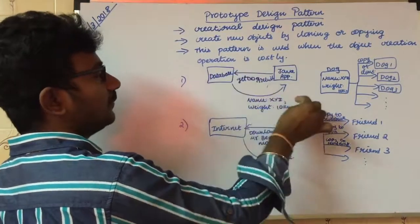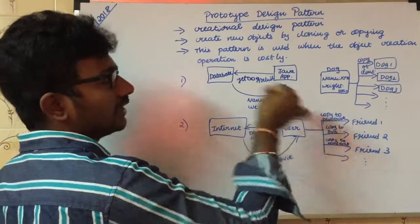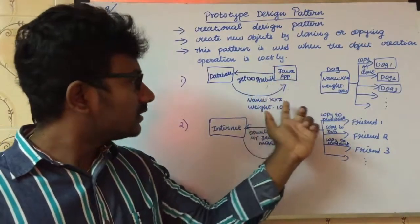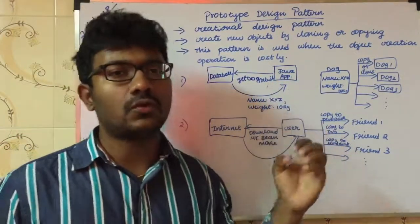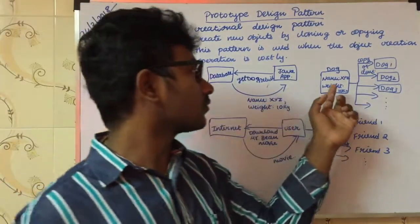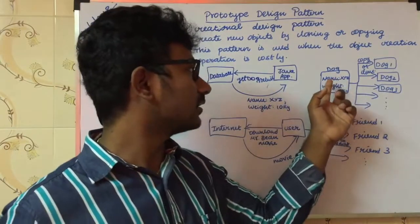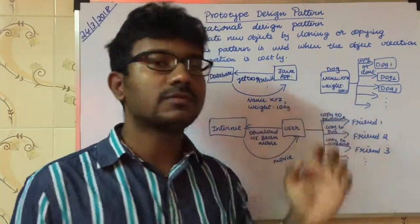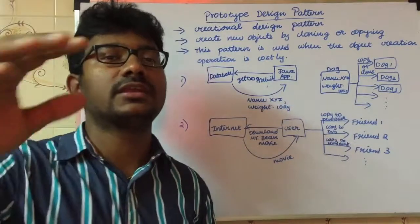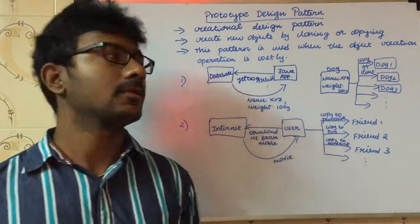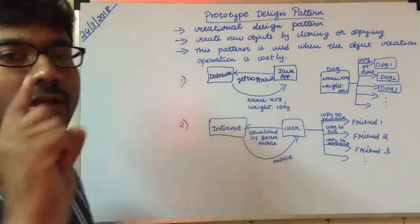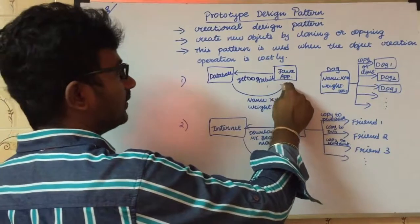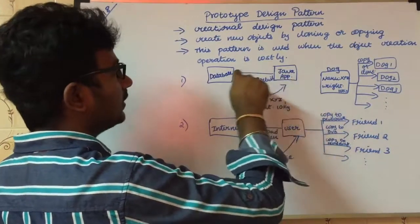The database returns a dog object with name XYZ and weight 10KG. This data is used to create a dog object. If this object needs to be created N times, what is possible in the Java application?